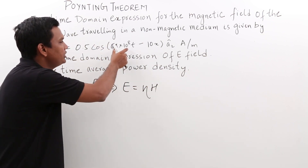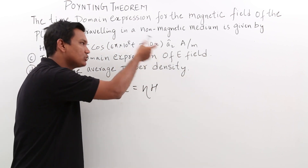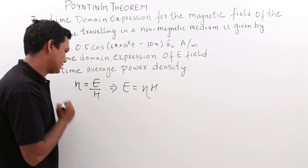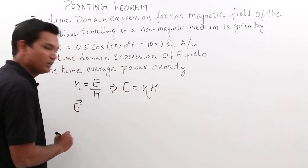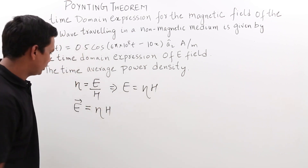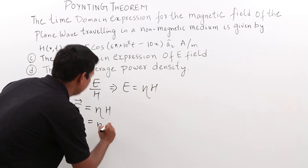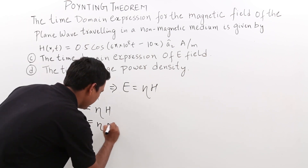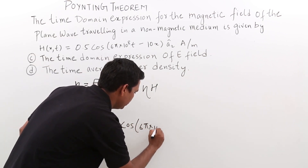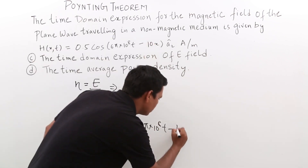The angular frequency omega remains the same and the wave nature remains the same. As the wave is propagating in the plus x direction, the electric field wave also propagates in the x direction. The electric field is given by eta times H, where H is 0.5 cos(6π × 10⁸ t − 10x), propagating in the plus x direction.